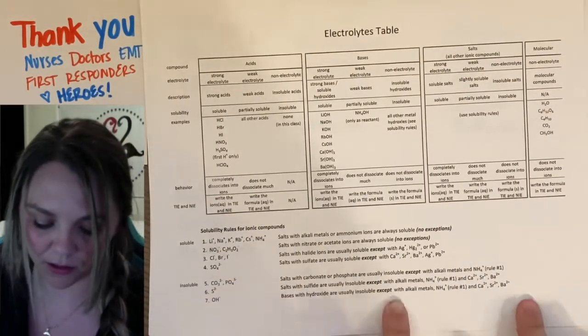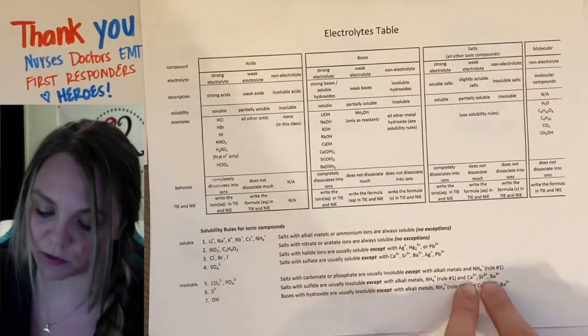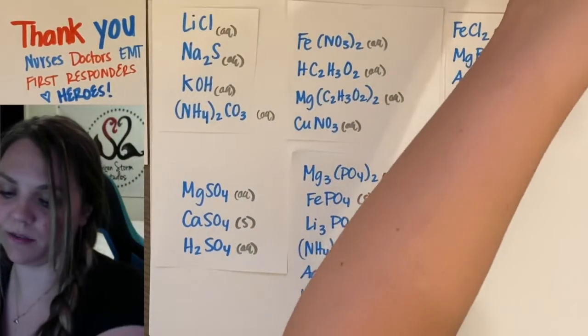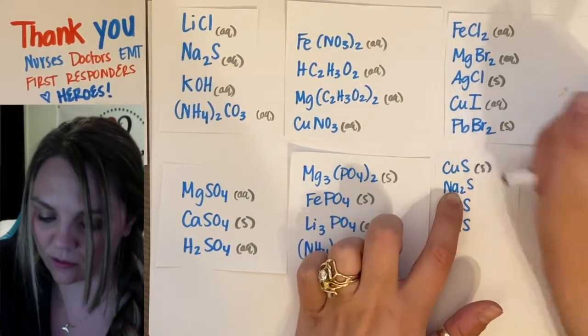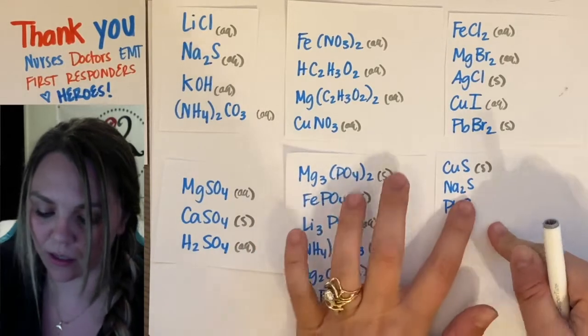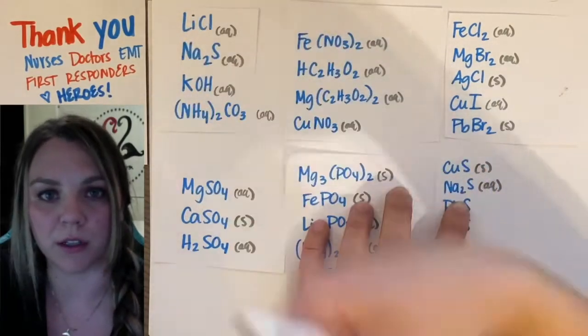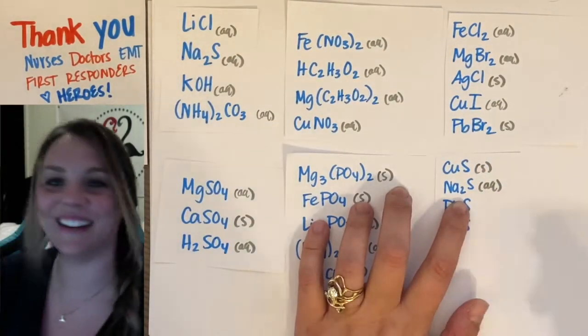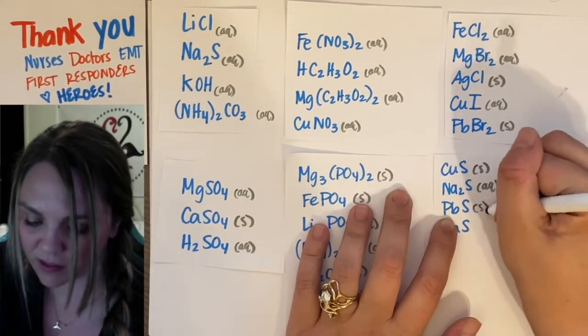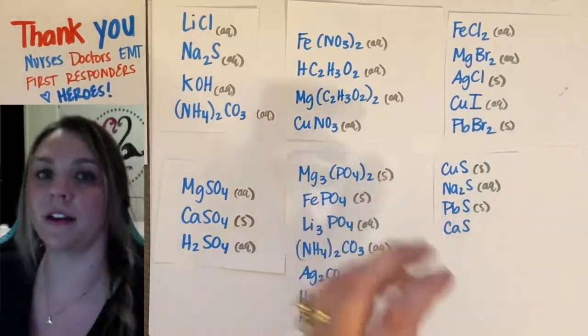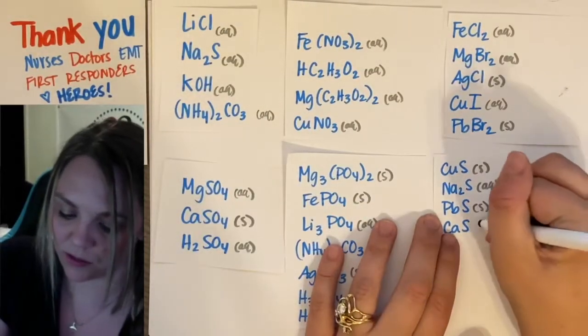Rule number six. Sulfides. So, all of your S's are going to be insoluble unless it's bonded with Rule 1 or calcium strontium barium. So, we get copper 2 sulfide, that's going to be solid. Sodium sulfide, that's going to be aqueous. Because, again, with Rule 1, it should not contradict itself. Lead 2 sulfide, that should be solid. Calcium sulfide. Ta-da! This is one of our Break the Rules ones, so this should be aqueous.